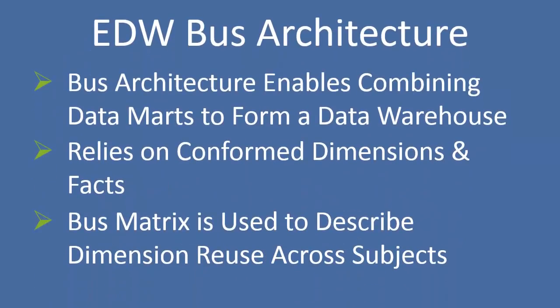The bus architecture is a way of taking individual data marts and combining them in a way that forms an integrated data warehouse. By an integrated data warehouse, what we mean is that we can pull data from one, two, three, or a number of individual data marts and be able to form or create a report or analytics that utilizes that data in an integrated way.